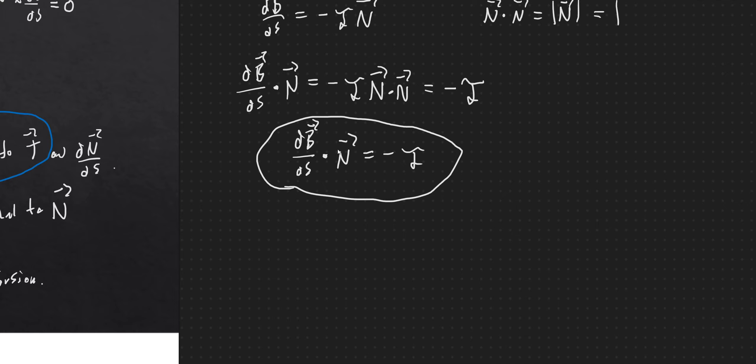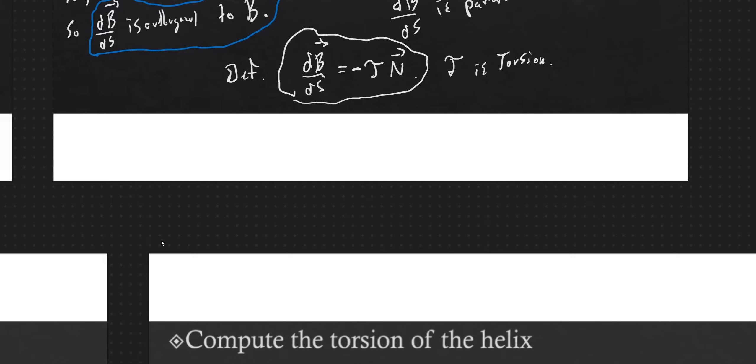So in order to calculate torsion, we're going to need to find b and we're going to need to find n. And then we'll take a derivative of b with respect to arc length and take a dot product with our unit normal vector.